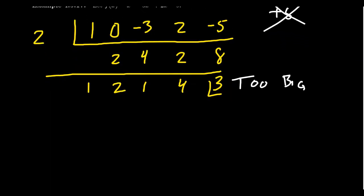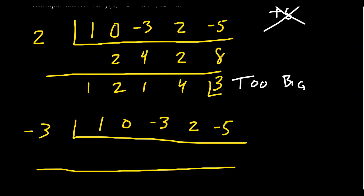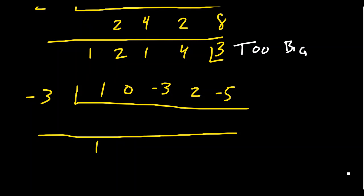On the other hand, if we tried something like, say, let's start this thing over again, 1, 0, negative 3, 2, and negative 5. Let's say we tried something like negative 3. If you bring down the 1, 1 times negative 3 is negative 3 plus 0 is negative 3 times negative 3 is positive 9 minus 3 is a positive 6 times negative 3 is going to be negative 18 plus 2 is a negative 16 times by negative 3 is going to give us a positive 48 minus 5, you're going to get 43.